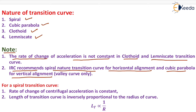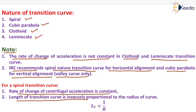This is very important from the GATE exam point of view: spiral nature transition curve is provided for horizontal alignment and cubic parabola is provided for vertical alignment, that is valley curves only. For a transition curve, the rate of change of centrifugal acceleration is constant, and the length of transition curve LT is inversely proportional to the radius of the curve.